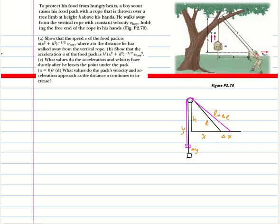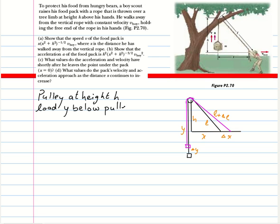While solving this problem, I would like to rephrase it in a different scenario to make it easier and give a further idea of how to solve this kind of problem. The situation is drawn here. Suppose we have a pulley at height h, and a load y meters below the pulley. We have height h, the load at y, and this distance is y.